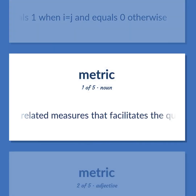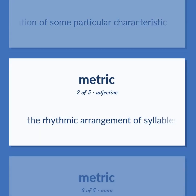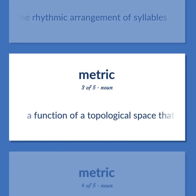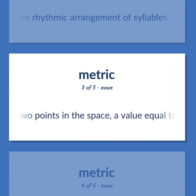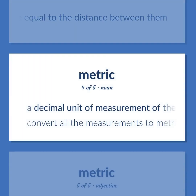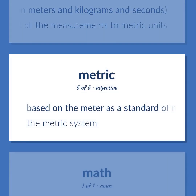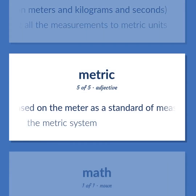A system of related measures that facilitates the quantification of some particular characteristic. The rhythmic arrangement of syllables. A function of a topological space that gives, for any two points in the space, a value equal to the distance between them. A decimal unit of measurement of the metric system, based on meters and kilograms and seconds. Convert all the measurements to metric units. Based on the meter as a standard of measurement. The metric system.